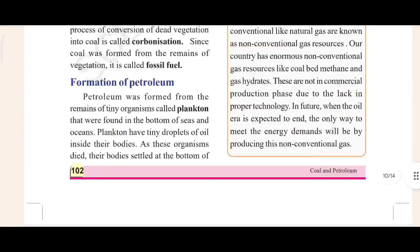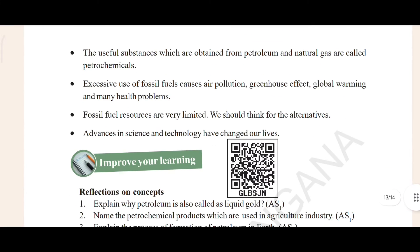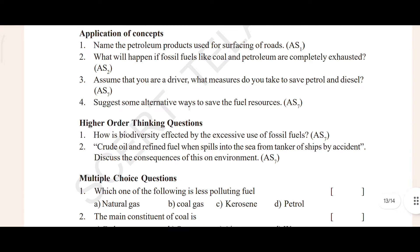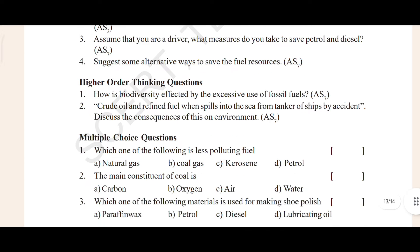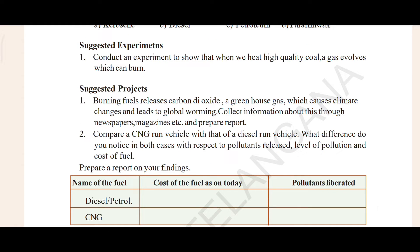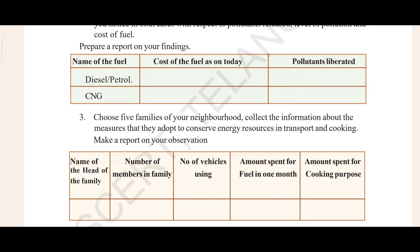When you come here you can see the keywords, then what we have learned — you can say important points. We will see the keywords, important points, and then improve your learning. In the improve your learning section there is a reflection of concept with four questions, application of concept with four questions, higher thinking questions with two questions, multiple choice questions, suggested experiment, and suggested project work.